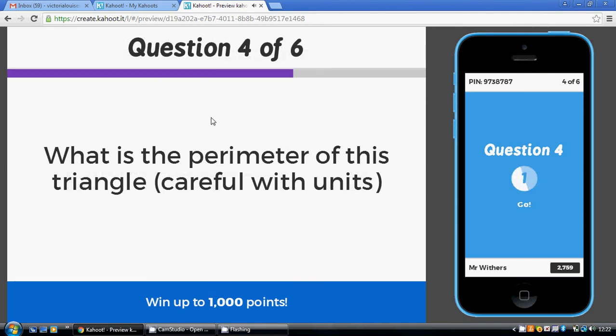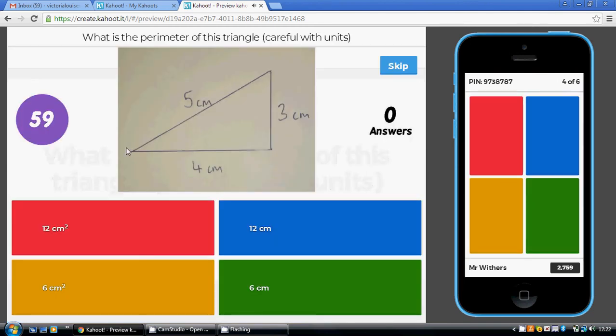Question four: we're being asked to work out the perimeter of this triangle. Perimeter is the length all the way around the outside, so that's running from here - that's a four plus a three plus a five. So that's four, five, six, seven, eight, nine, ten, eleven, twelve - twelve centimeters. Perimeter is the length, so it's just twelve centimeters.